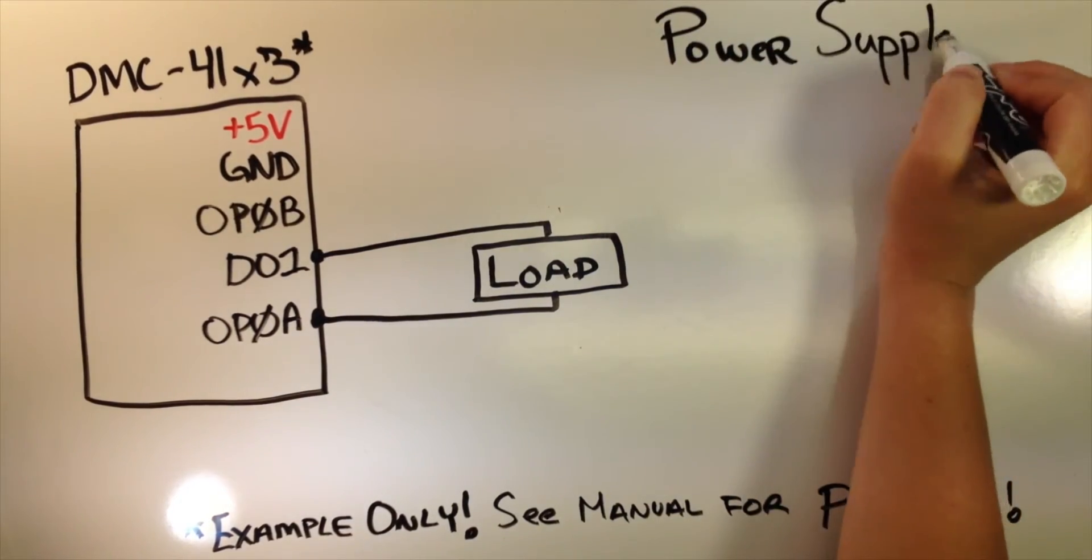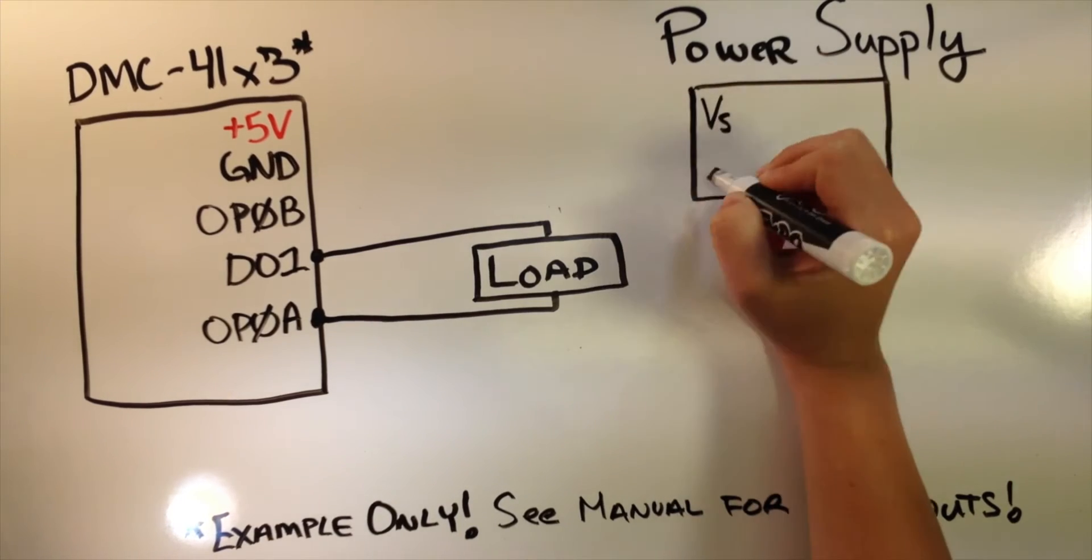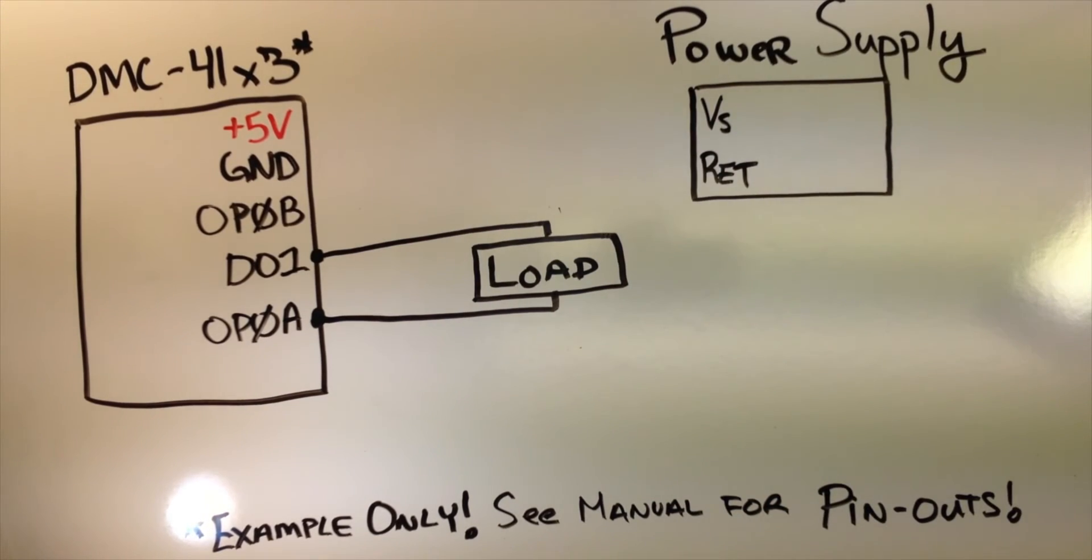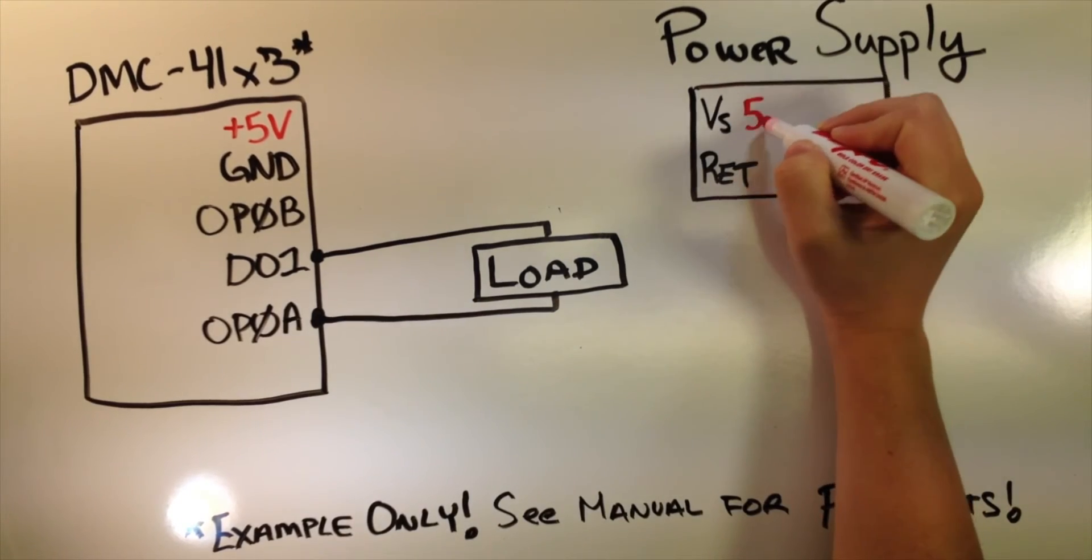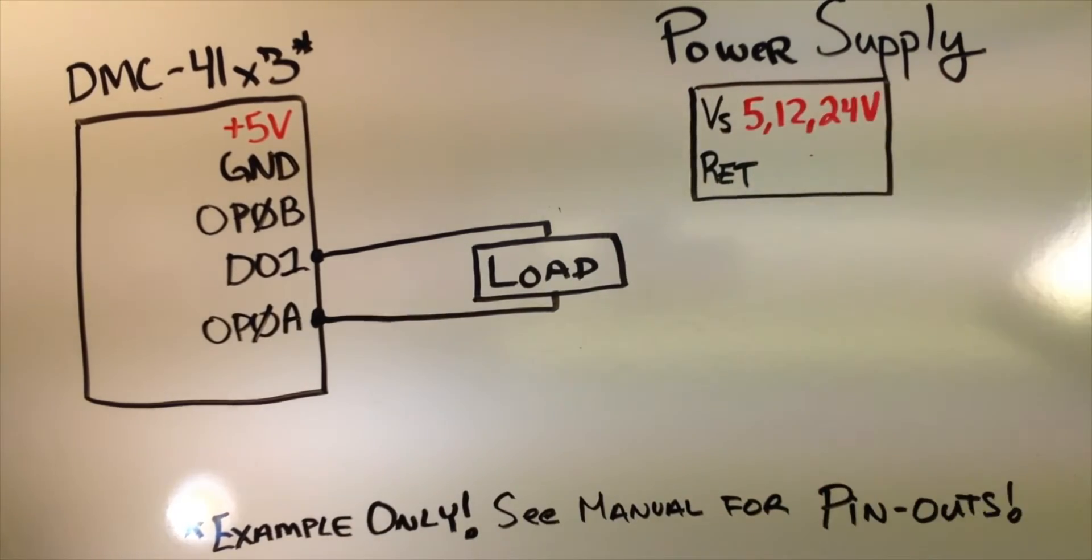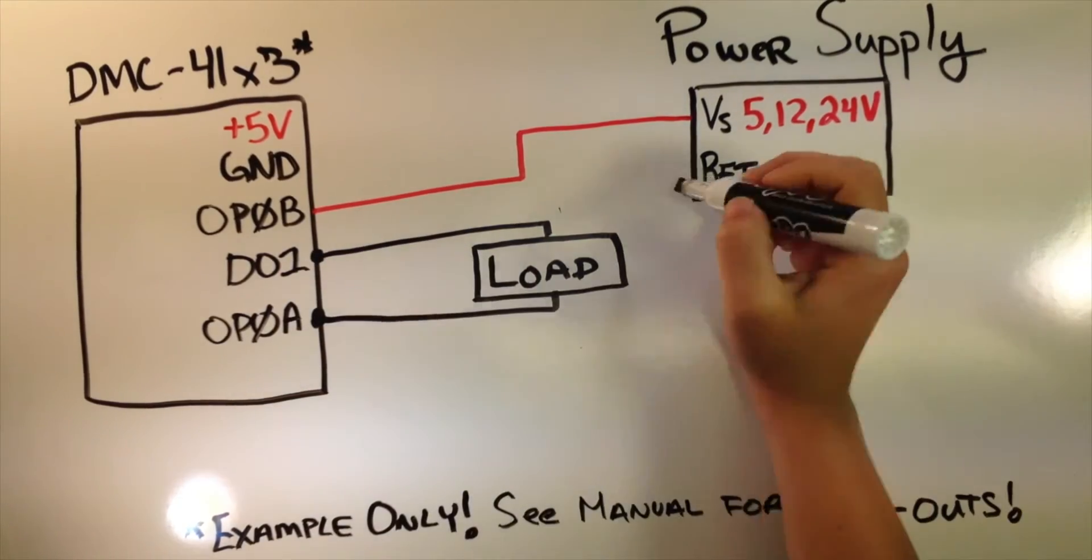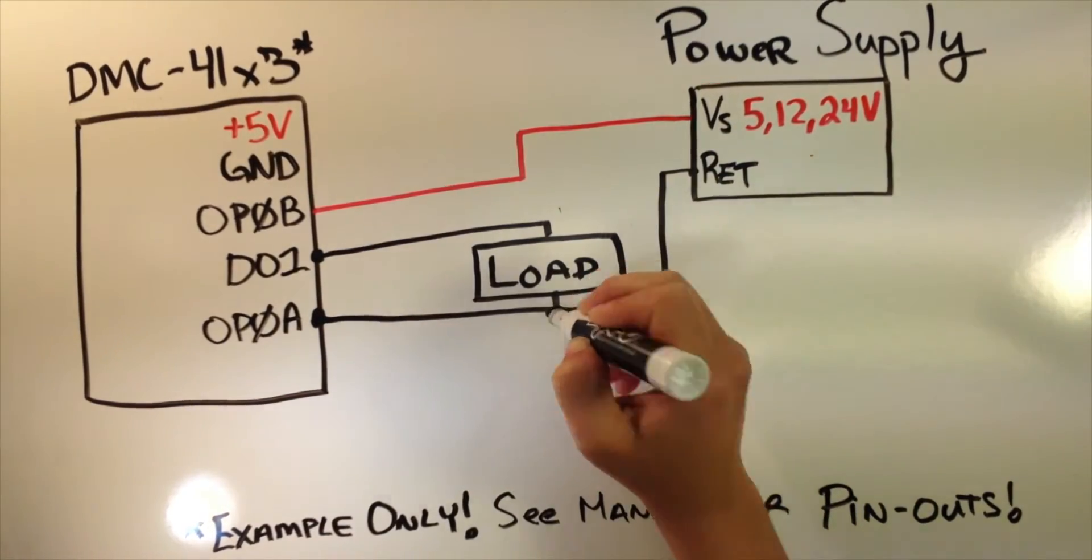As required for true opto-isolation, the user must supply an external voltage to provide power to the load. Galil's opto-isolated outputs can be powered by placing 5, 12, or 24 volts on the output supply and the power supply ground to the output supply return.